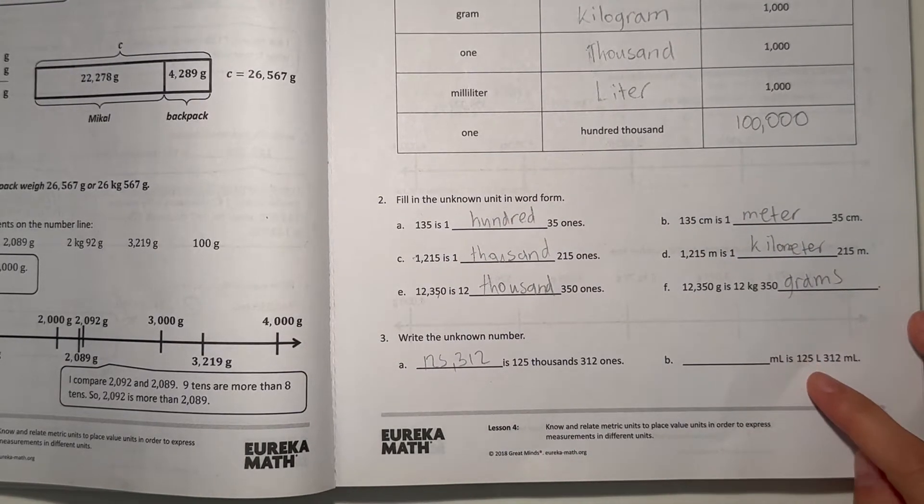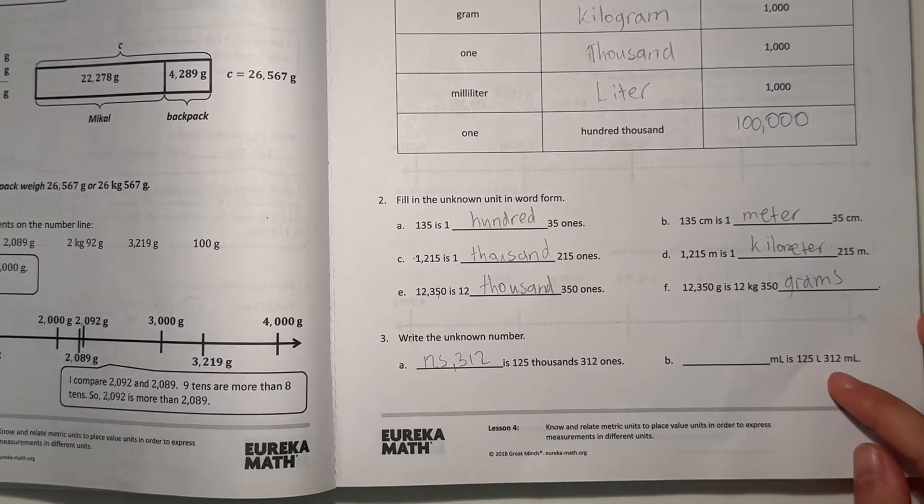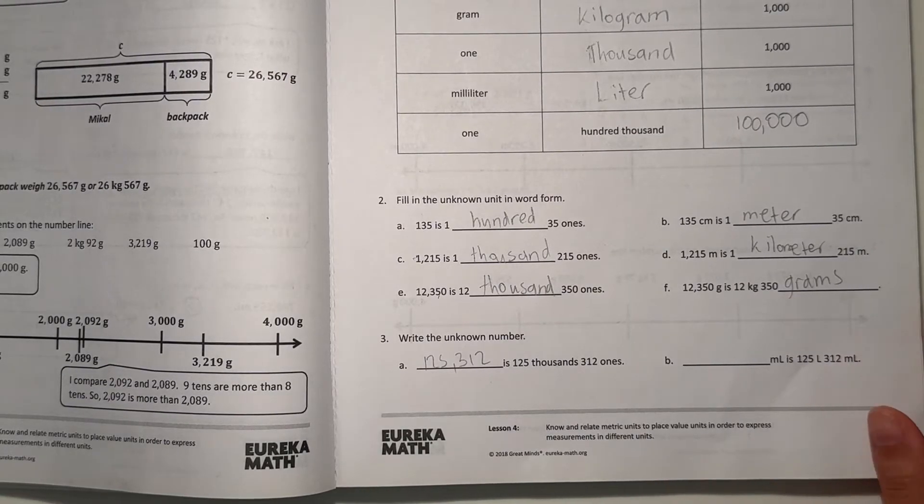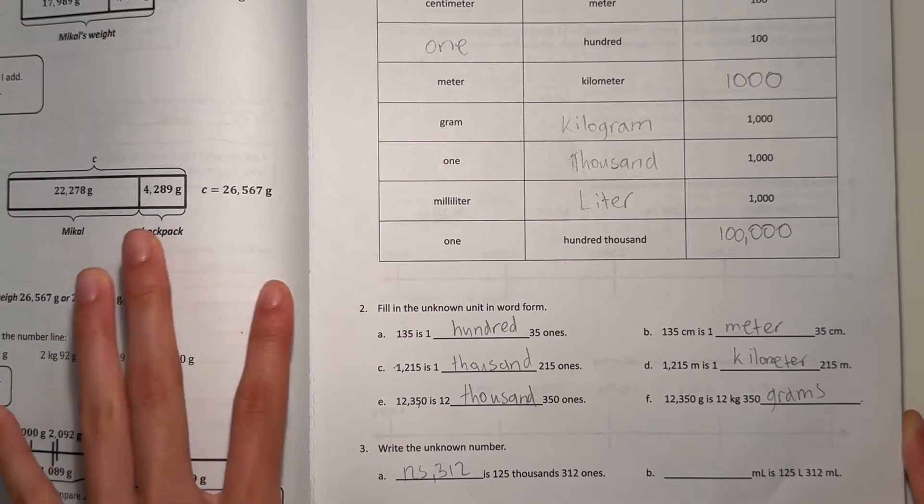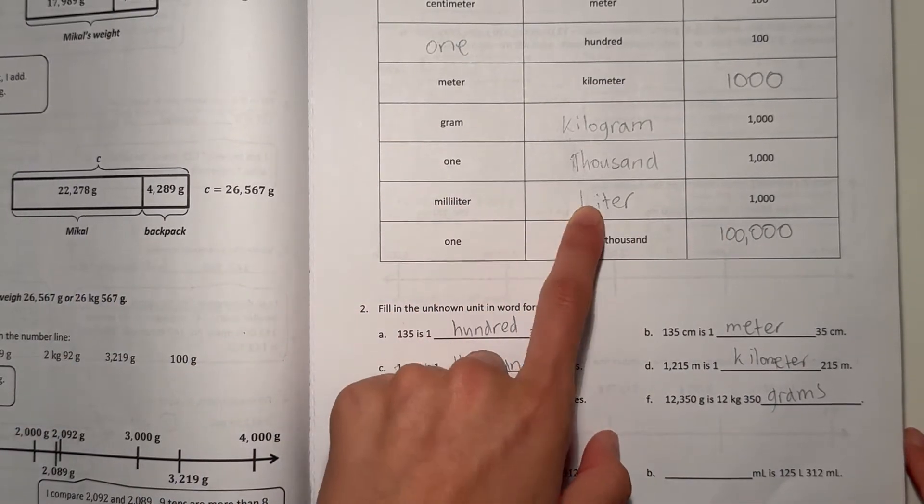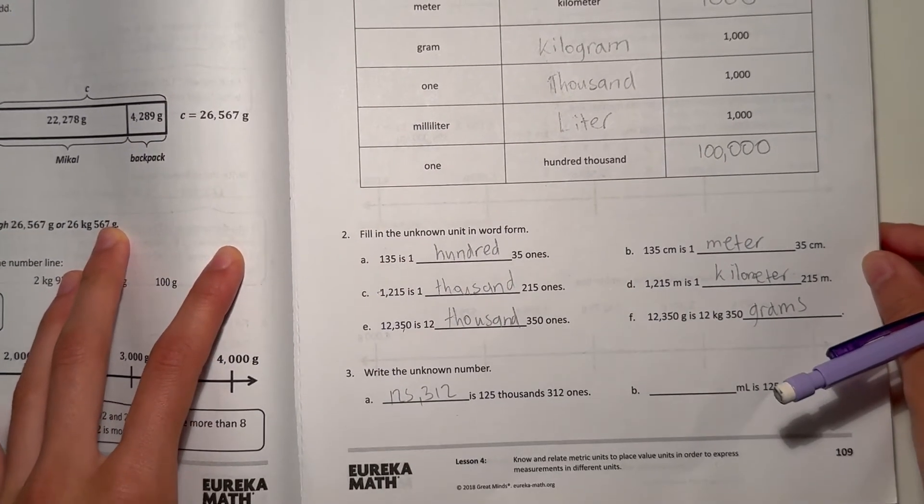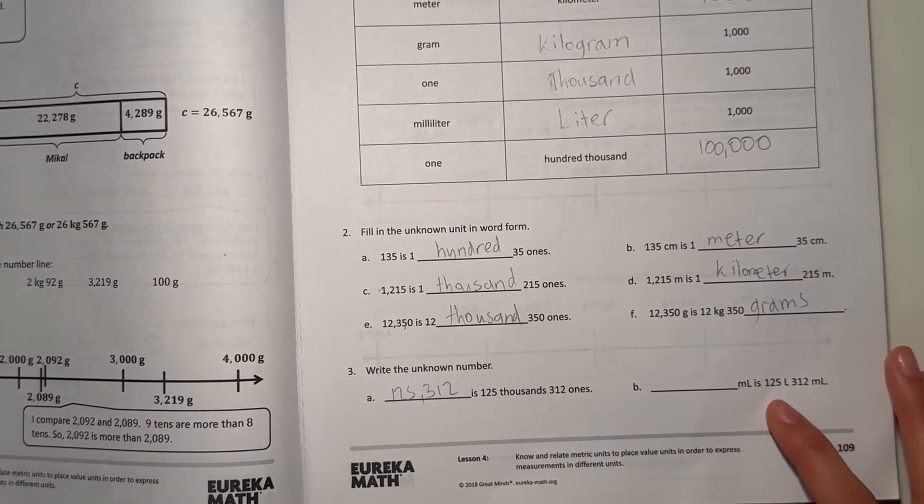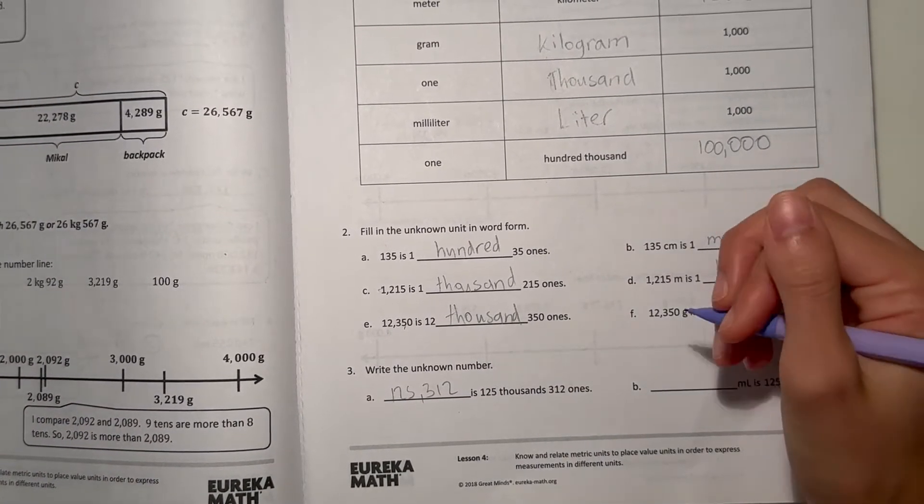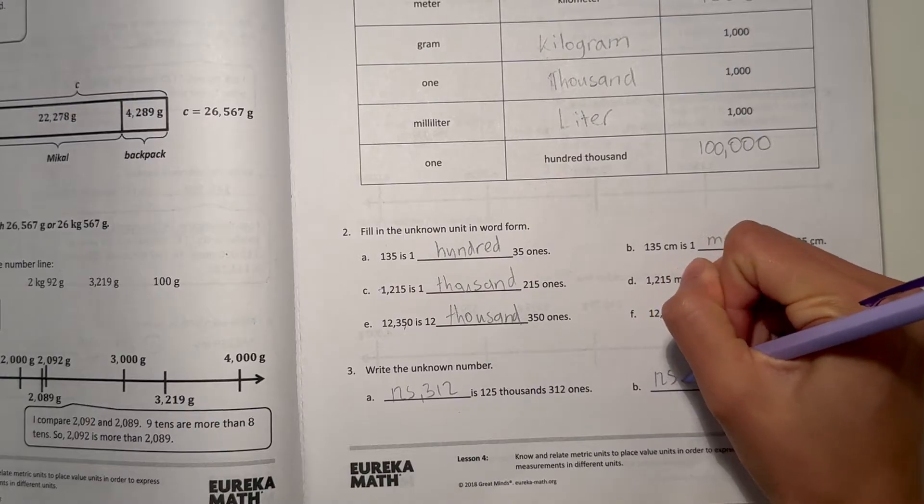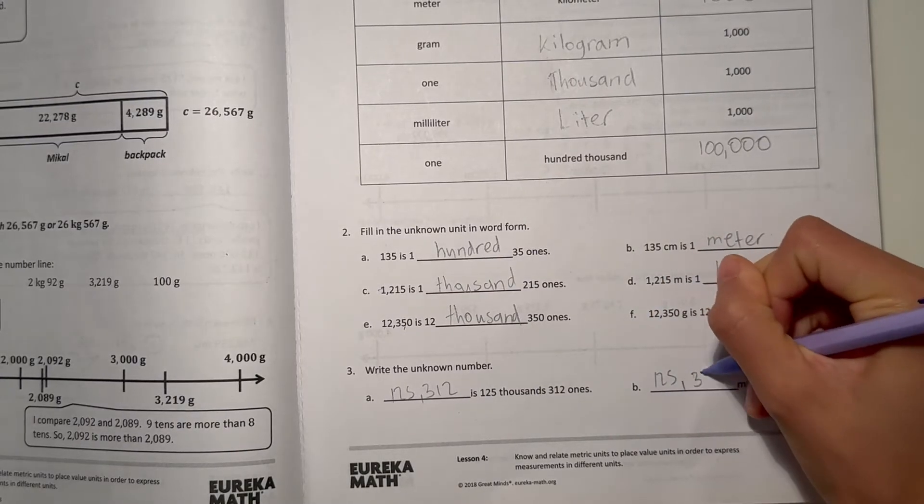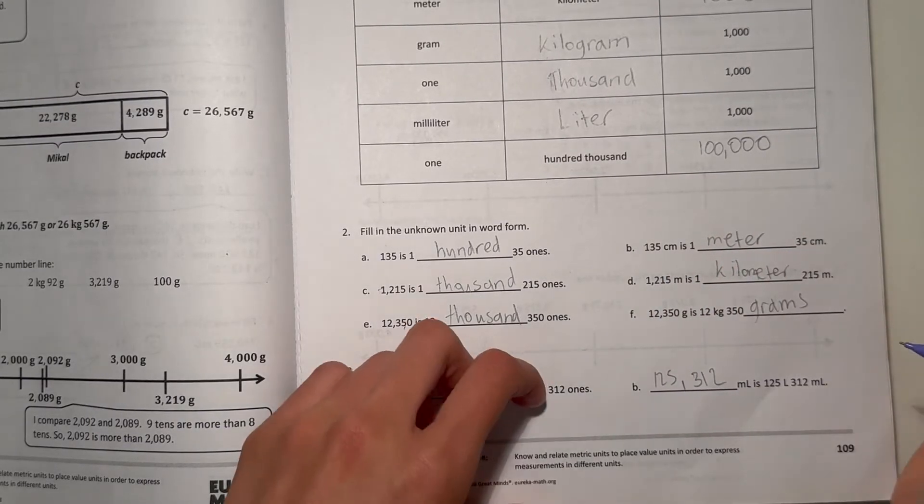And then B, blank milliliters is 125 liters, 312 milliliters. Well, if we look back at our chart here, we know there's 1,000 milliliters in 1 liter. So since we know there's 125 liters, then we're going big to small, so times 1,000. That's 125,312 milliliters.